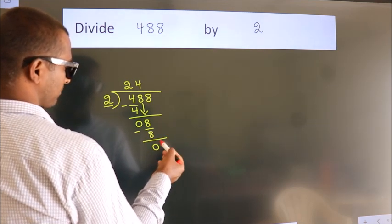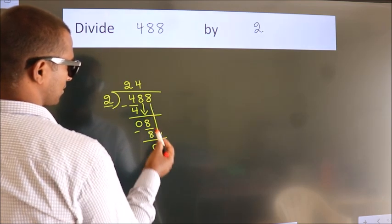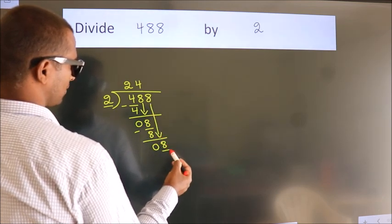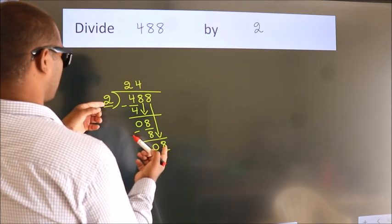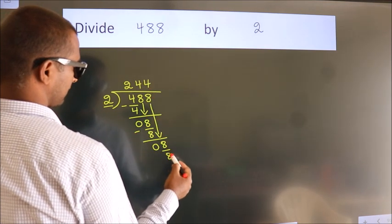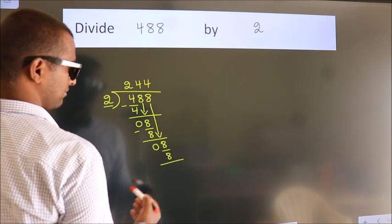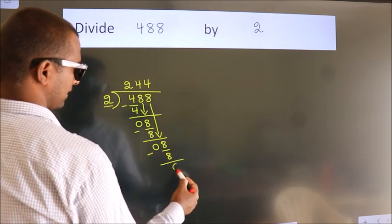After this, bring down the beside number. So, 8 down. So, 8. When do we get 8? In 2 table. 2 4's, 8. Now, we subtract. We get 0.